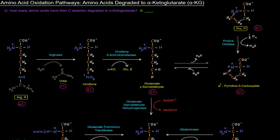Okay, so next up, the amino acids that are degraded to alpha-ketoglutarate. And how many amino acids are there that have their carbon skeleton degraded directly to alpha-ketoglutarate? There are five, five of them.